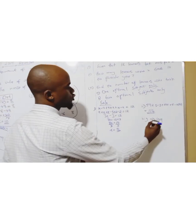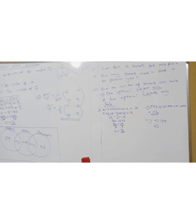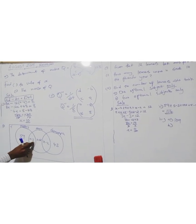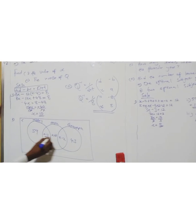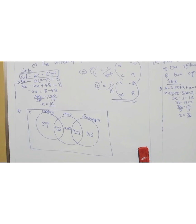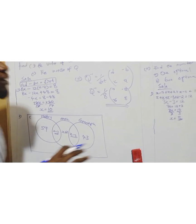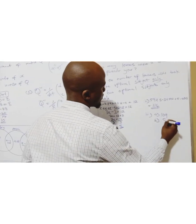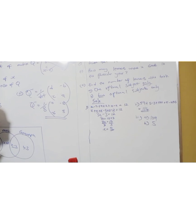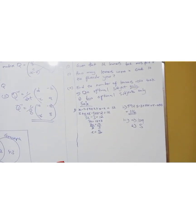Then we have two optional subjects only. Two optional subjects — we are looking at the intersections. So we add the intersection parts: (5 minus 3) plus (5 minus 2), which gives us 5. When they say 2, they're talking about intersection. When they say 1, they're talking about the exclusive part.